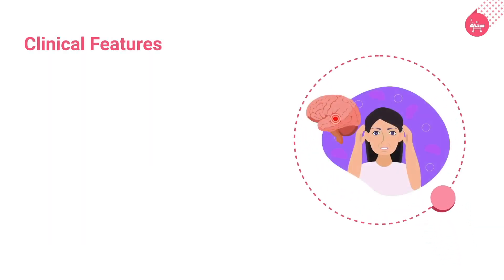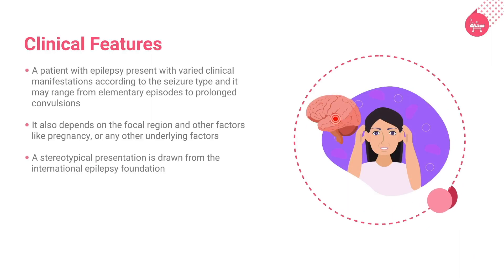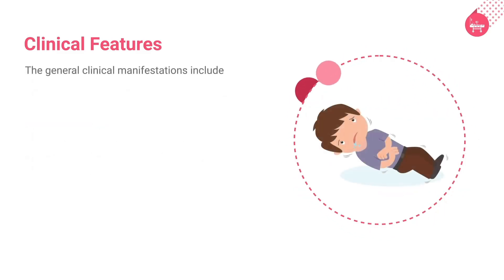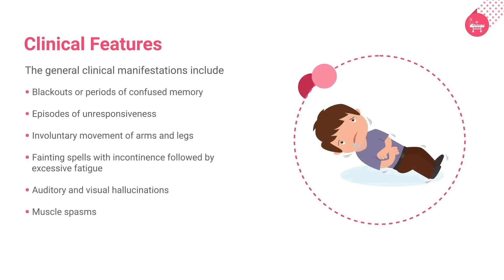Now let us discuss the common clinical presentation of a patient with epilepsy. A patient with epilepsy presents with varied clinical manifestations according to the seizure type, and it may range from elementary episodes to prolonged convulsions. It also depends on the focal region and other factors like pregnancy or any other underlying factors. The general clinical manifestations include blackouts or periods of confused memory, episodes of unresponsiveness, involuntary movement of arms and legs, fainting spells with incontinence followed by excessive fatigue, auditory and visual hallucinations, and muscle spasms.